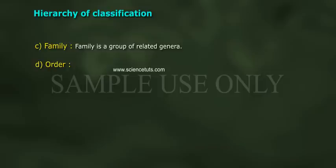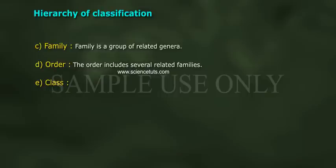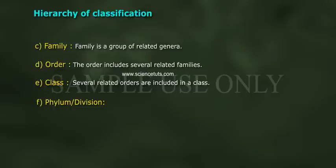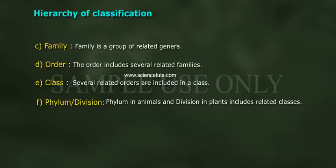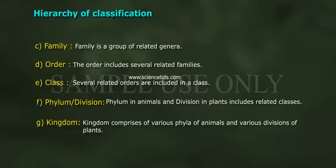Family is a group of related genera. Order includes several related families. Class includes several related orders. Phylum in animals and division in plants includes related classes. Kingdom comprises various phyla of animals and various divisions of plants.